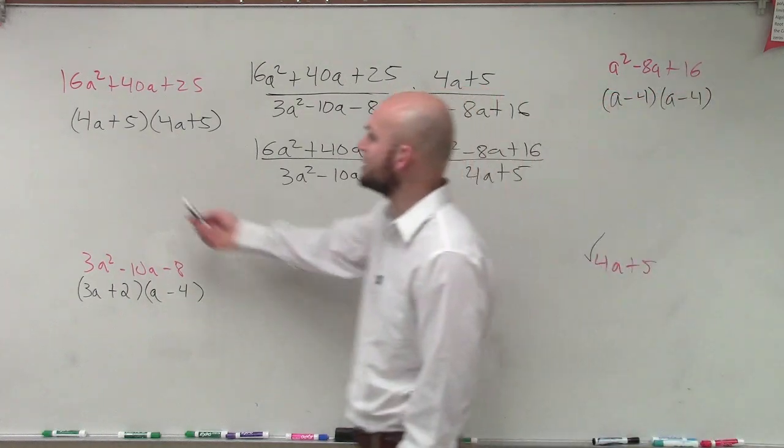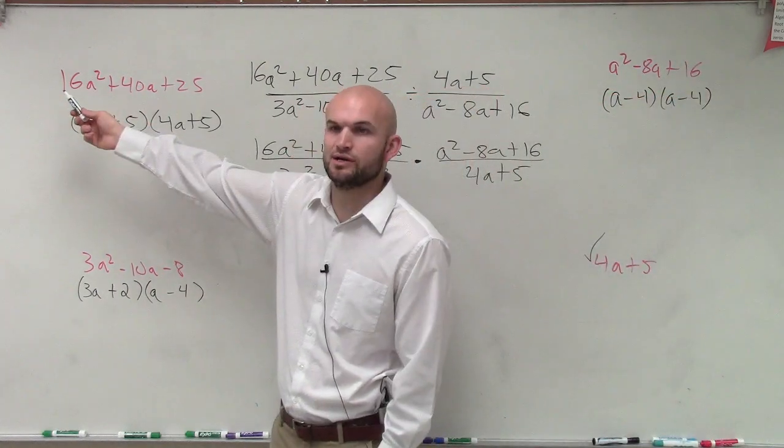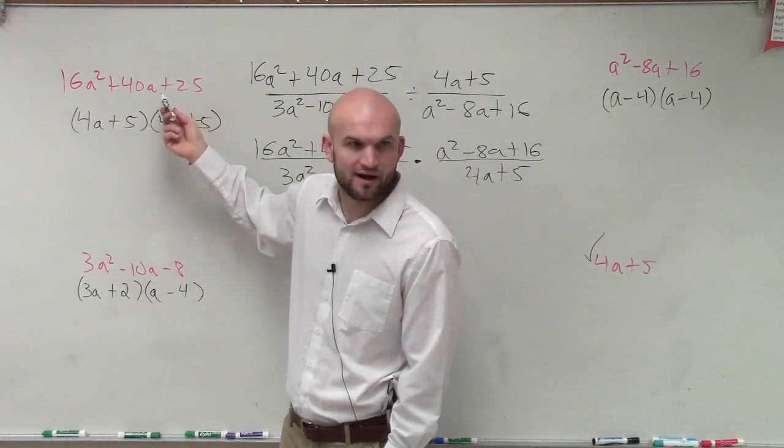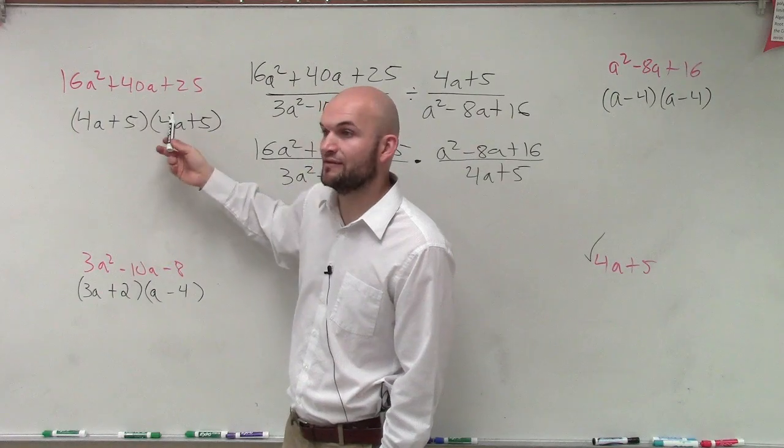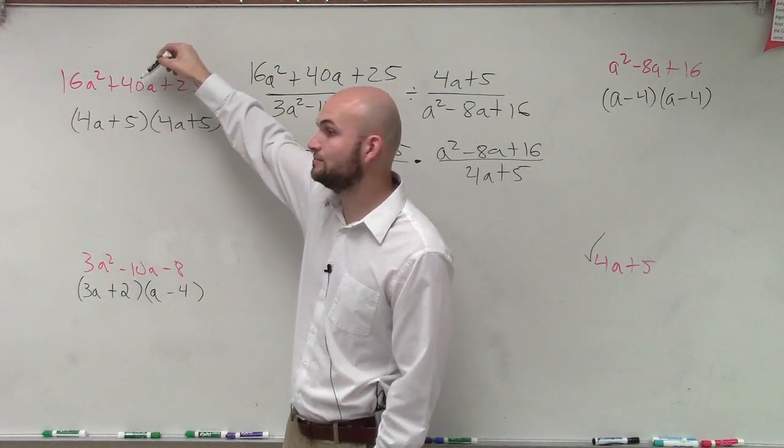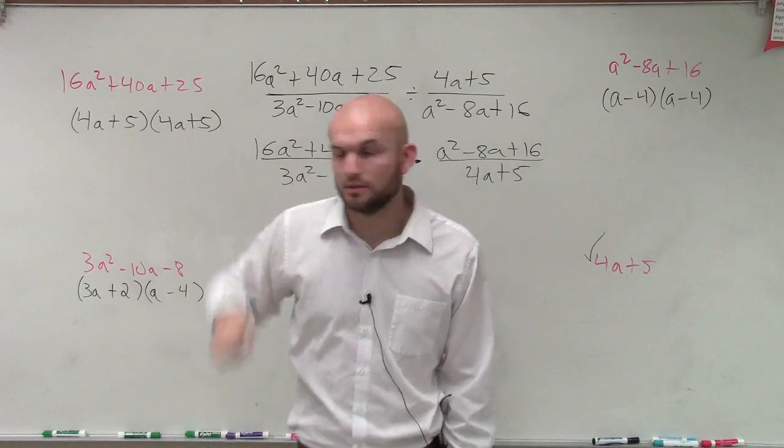How do I know that? Well, guys, check. 4a times 4a is 16a squared, yes? 5 times 5 is 25. 4a times 5 is 20a. 4a times 5 is 20a. 20a plus 20a is 40a. True.